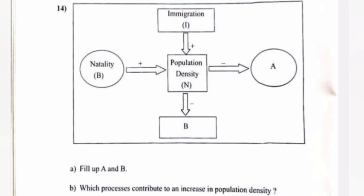Question 14: Fill up A and B. A: Mortality. B: Immigration. Which processes contribute to an increase in population density? Answer: Immigration and natality.